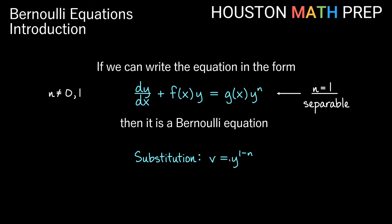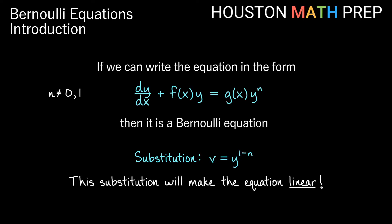The substitution v equals y to the 1 minus n is going to turn this into a linear equation, so we'll need to use something like an integrating factor to solve it the rest of the way. For a homogeneous equation, the substitution makes the equation separable; for a Bernoulli equation, this substitution makes it linear. Before you start working with your Bernoulli equation, just like linear equations have a normal form, we want to rearrange it into this standard form before we begin.